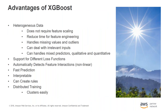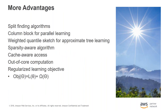Advantages of XGBoost: first, heterogeneous data — think spreadsheets or SQL. You don't need extensive feature scaling or feature engineering. It handles missing values and outliers, deals with irrelevant inputs, and tests show that adding noise barely affects final models. It handles mixed predictors — both qualitative and quantitative. It supports many loss functions, automatically detects feature interactions, is very fast at prediction, and the results are interpretable enough to create independent rule sets. Training can also be distributed easily, dramatically reducing training time.